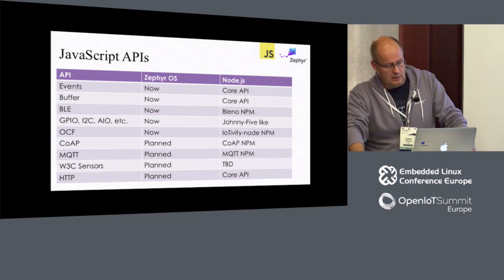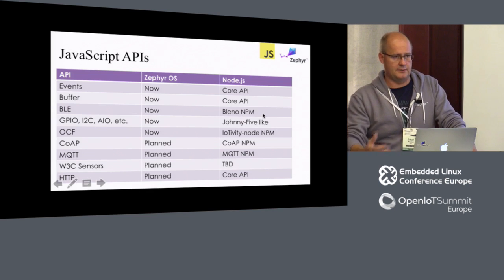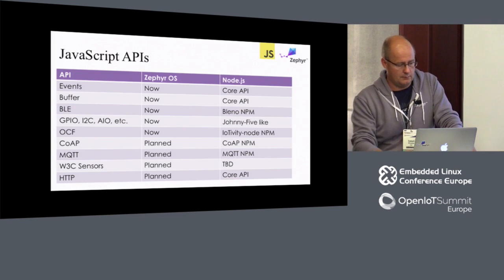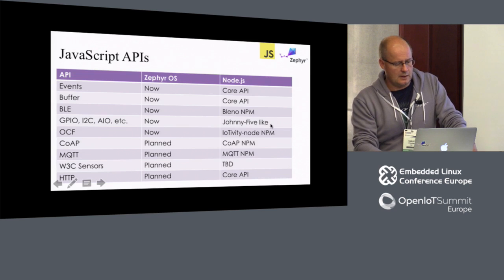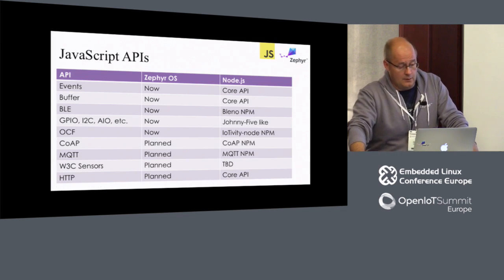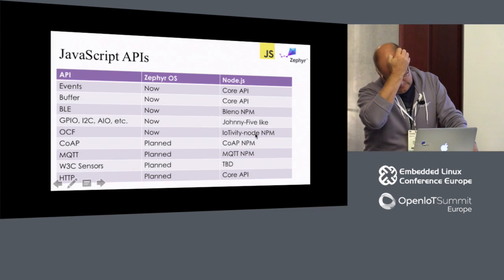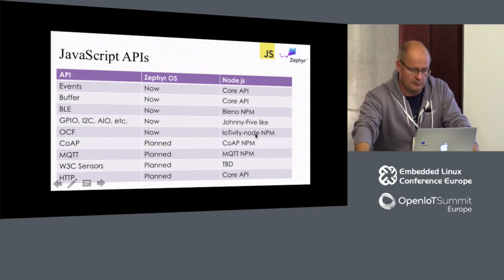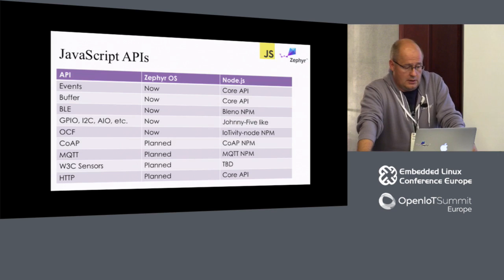We are using the Bleno API. So basically what you should be able to do is take your BLE code written on top of Bleno and run that on the Arduino or on Zephyr. The same with the GPIO, pins and buses API. The Johnny-Five framework is very popular in the Node.js world, and we are following that API paradigm as much as we can. On the OCF side, we've done an IoTivity Node.js NPM package — we've been doing that for over a year. It has a pretty stable, good API and has been used in a few other projects. So we have implemented the same API for the Zephyr JavaScript runtime.